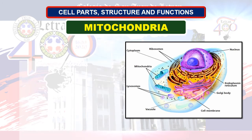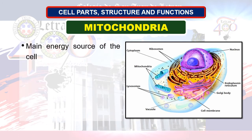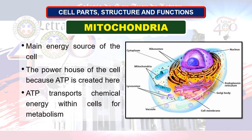Next in line: mitochondria. Mitochondria are the main energy source of the cell. They are the powerhouse of the cell because adenotriphosphate, or ATP, is created here. They appear as rounded cylinders enclosed by membranes. They are sites of chemical reactions that extract energy from food, which is later used for the activities of the cell.